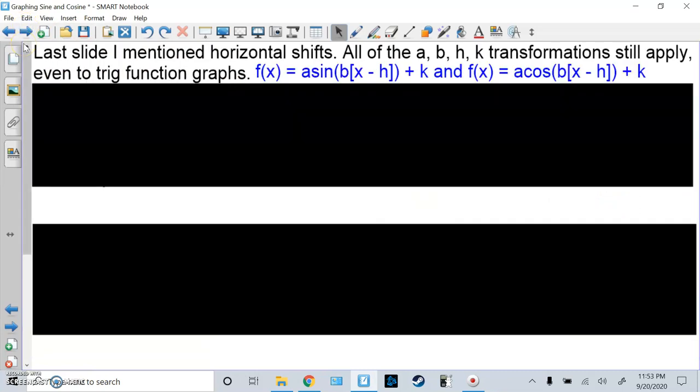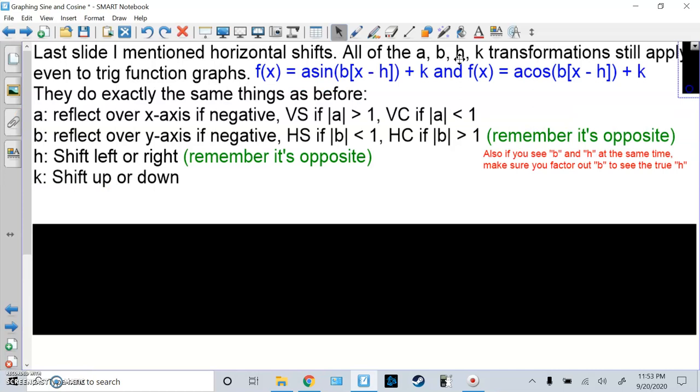Last slide I mentioned horizontal shifts. All of the a, b, h, k transformations still apply even to trig function graphs. So we'll have the format f of x equals a times sine of b times parentheses x minus h close parentheses plus k, or for cosine, same idea. There's a, b, those are the multipliers, and there's h, k, those are the adding subtracts. And in case you've forgotten, they do the exact same thing as before.